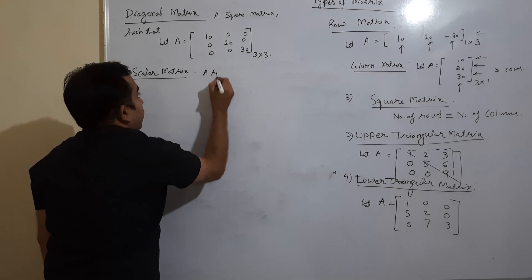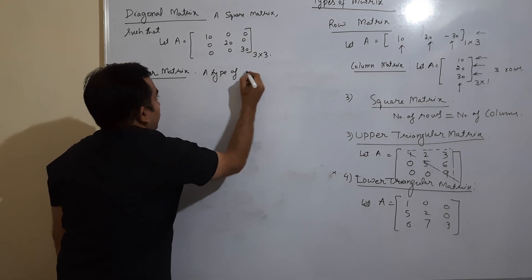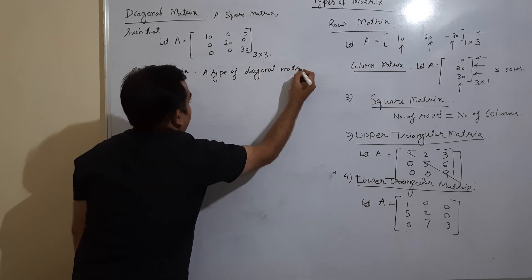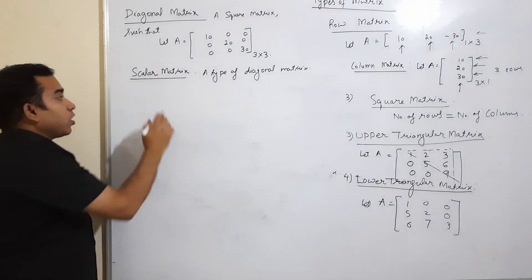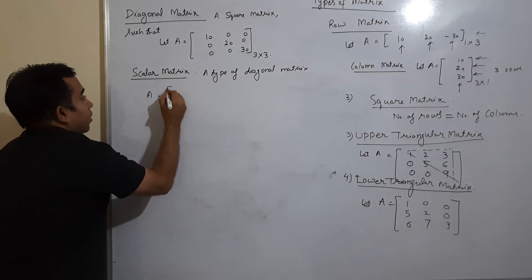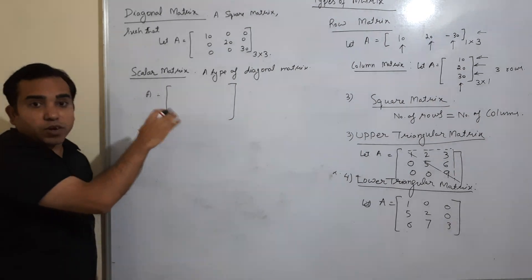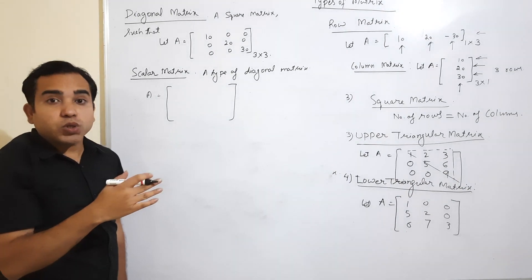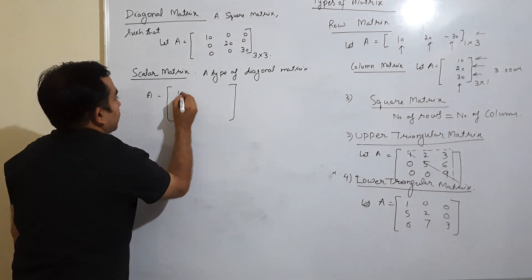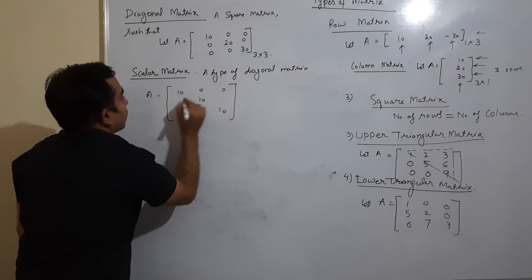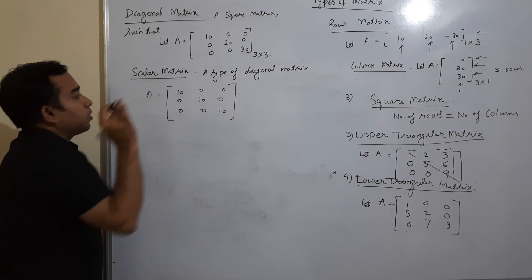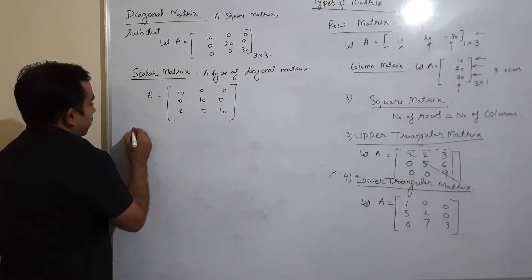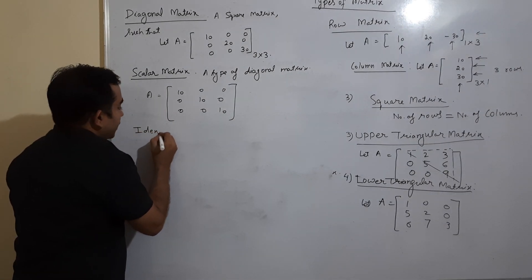Next is scalar matrix. It is a type of diagonal matrix — meaning all off-diagonal entries are zero, just like a diagonal matrix, but additionally all the diagonal entries are the same value. For example, if all diagonal entries are 10, this is a scalar matrix. There is one more type — the identity matrix.